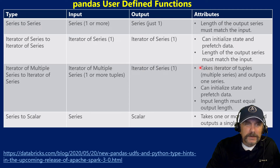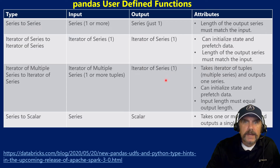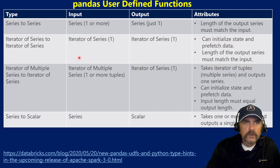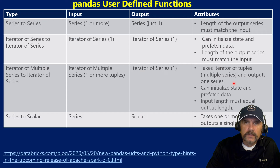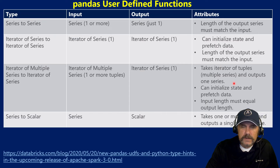Iterator of multiple series to iterator of series takes, as it sounds, multiple series — one or more — in the form of a tuple, and then returns a series back. What you can do in series to series with one or more series is actually broken up into two different functions in the iterator approach. And as before, we can initialize state and get the benefits of prefetching data. The input length of the series must be the same on input and output.